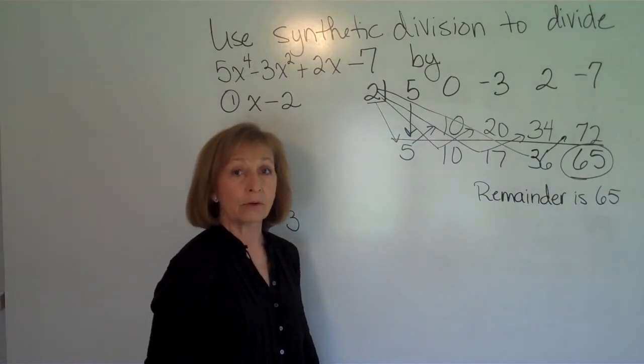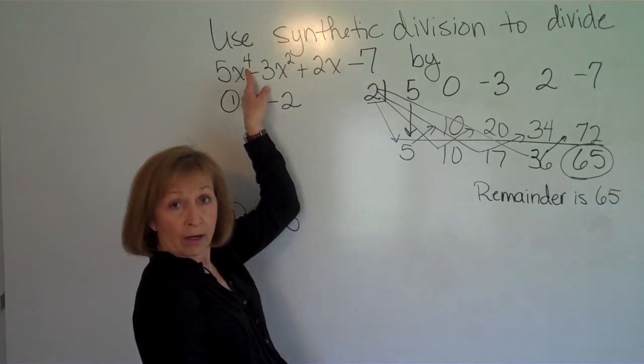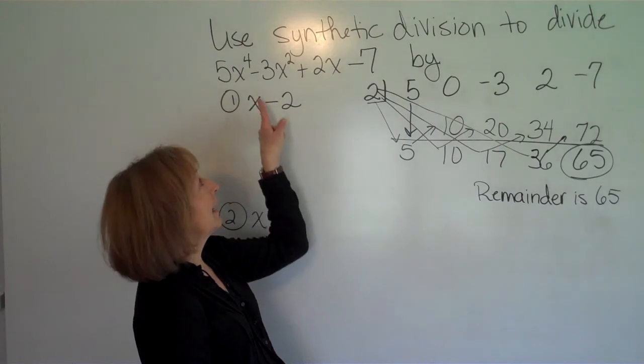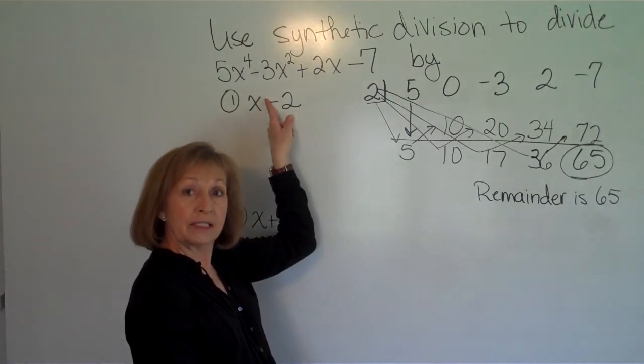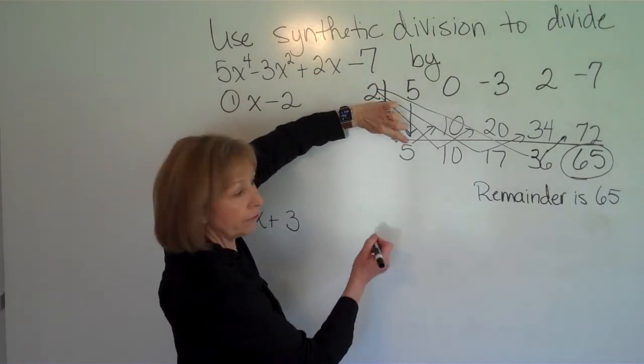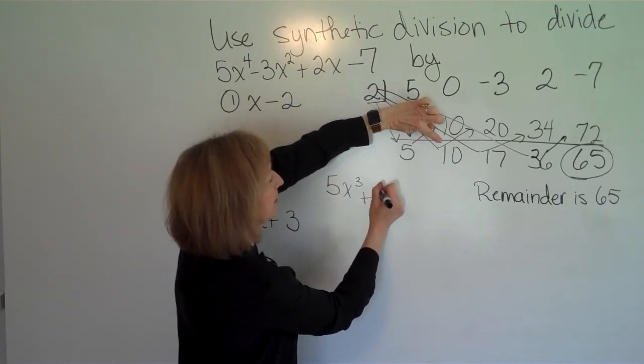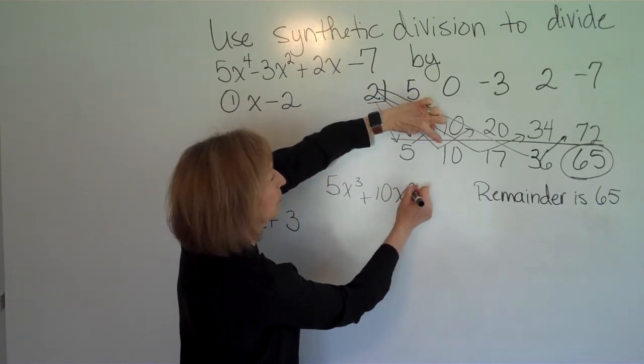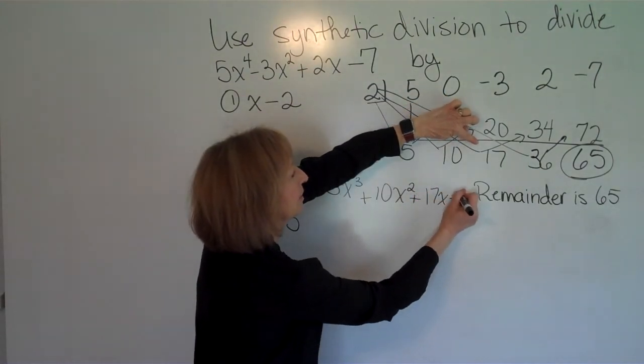There are two different ways you can get the quotient. The first way is to realize that if you had an x^4 and you divided it by an x^1, your quotient's highest power is going to be an x^3. So using these numbers as coefficients in front of that, it'll be 5x^3 + 10x^2 + 17x + 36.